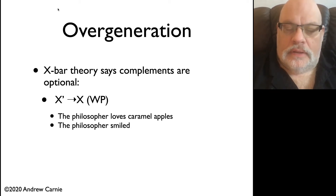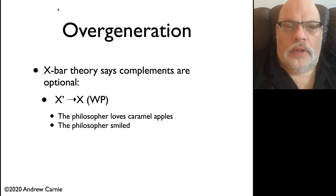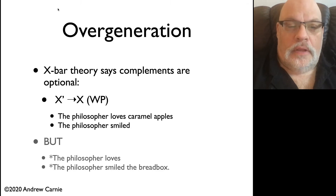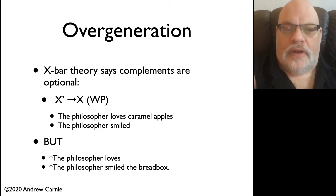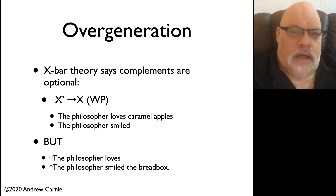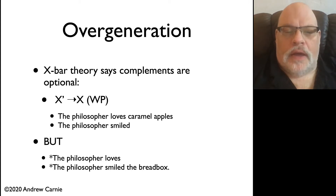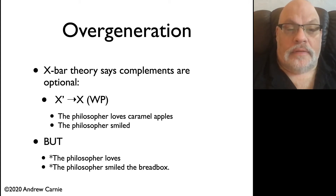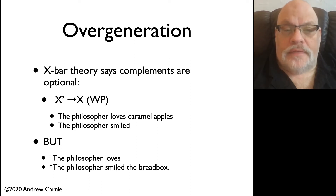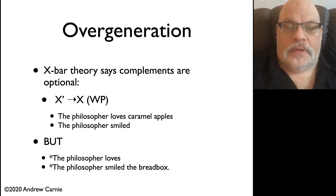But once you dig a little deeper, you see that this structure will produce sentences that are actually ungrammatical. For example, it will produce the sentence: the philosopher loves. And here, I don't mean a generic reading — the philosopher is a great lover, or the philosopher loves everybody. I'm talking about a sentence that parallels the philosopher loves caramel apples. The philosopher loves is ungrammatical with this interpretation.